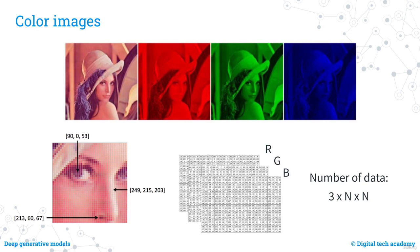For colour images, the process is slightly different. It is possible to create any colour by combining three basic colours — red, green, and blue. Therefore, each pixel in a colour image corresponds to three numbers representing the amount of red, green, and blue, meaning three n-by-n matrices are needed to represent a colour image, one for each colour. Thank you and see you at the next lecture.